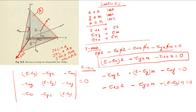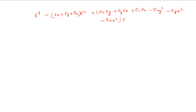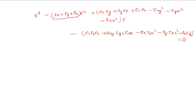Since l, m, n cannot all be zero, the determinant of the coefficient matrix must equal zero. Expanding this determinant gives the cubic characteristic equation: sigma^3 - (sigma_x + sigma_y + sigma_z)·sigma^2 + (sigma_x·sigma_y + sigma_y·sigma_z + sigma_x·sigma_z - tau_xy^2 - tau_yz^2 - tau_xz^2)·sigma - (sigma_x·sigma_y·sigma_z + 2·tau_xy·tau_yz·tau_xz - sigma_x·tau_yz^2 - sigma_y·tau_xz^2 - sigma_z·tau_xy^2) = 0. These constant terms are the stress invariants.